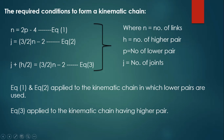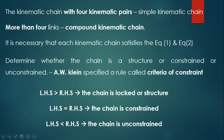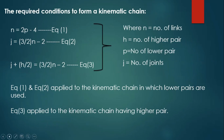Today we are going to discuss the required conditions to form a kinematic chain. There are three equations: Equation 1: n = 2p − 4; Equation 2: j = (3/2)(n − 2); Equation 3: j + h/2 = (3/2)(n) − 2.